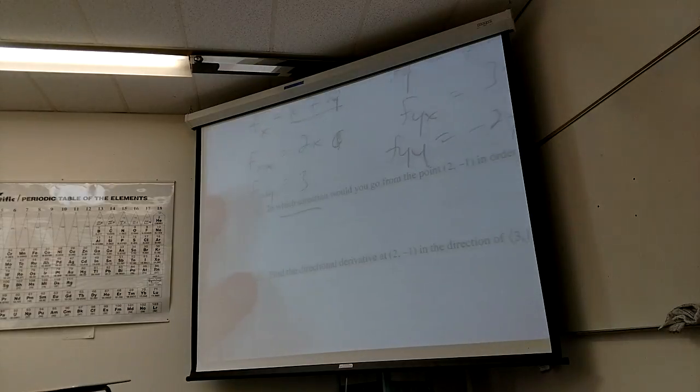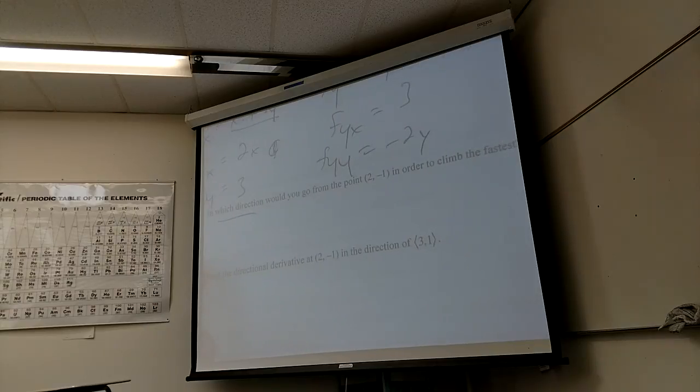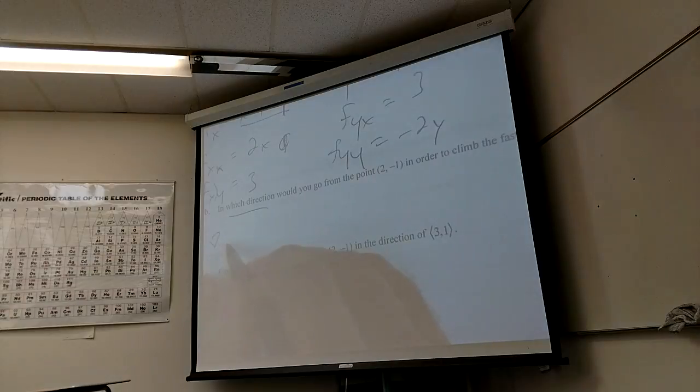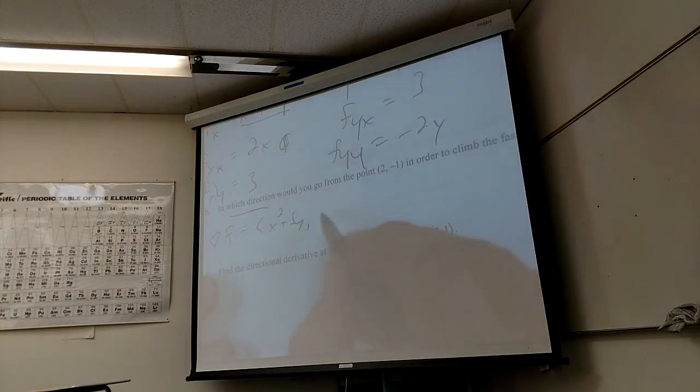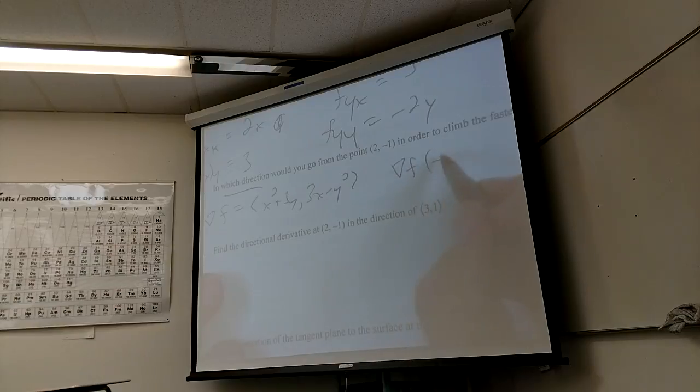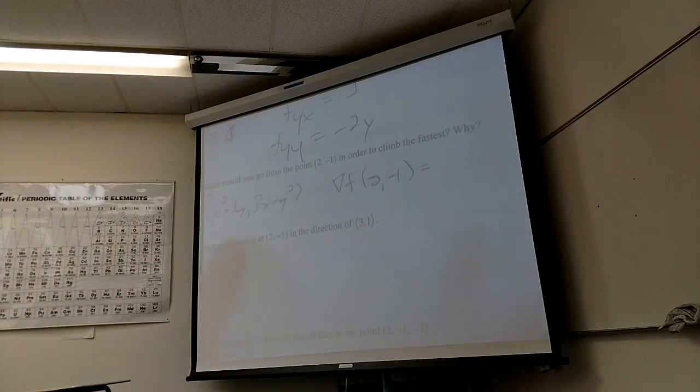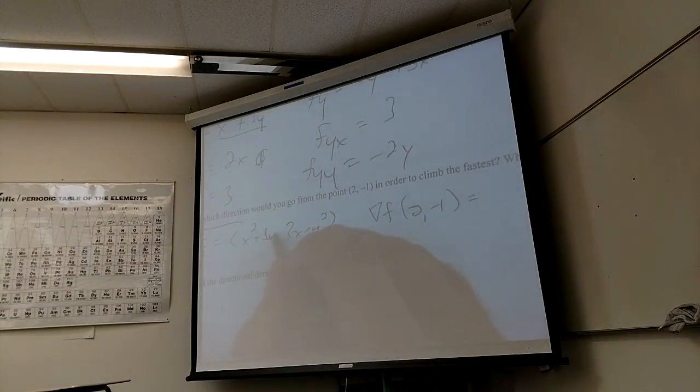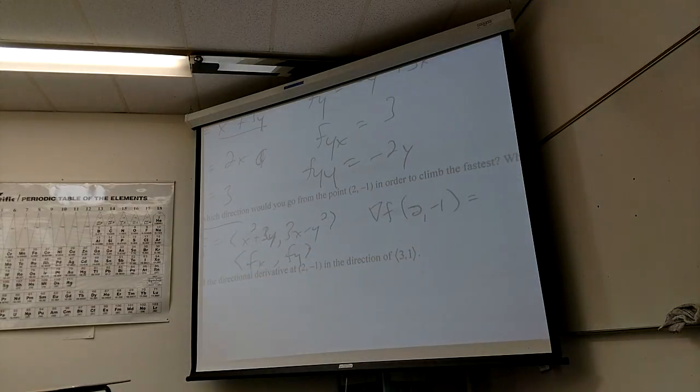Now this one is a conceptual question in the beginning. But then you have to actually follow over the work. Conceptually what direction do I go to climb the fastest? The direction of the? The direction of the? Gradient. Gradient. And then find the gradient at the point now. So we are writing down all the work I need for the gradient in general. Right? That would be x squared plus 3y comma 3x minus y squared. So what is the gradient at 2 negative 1?